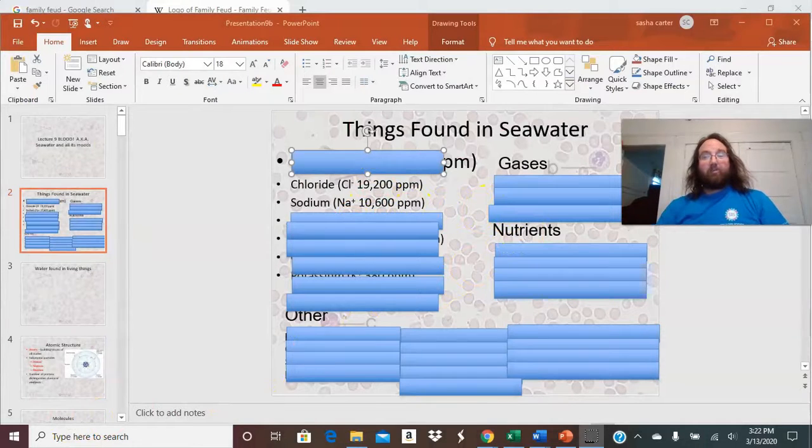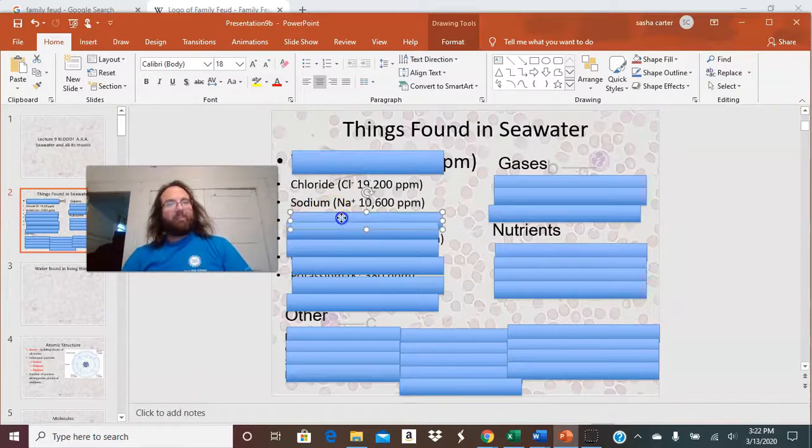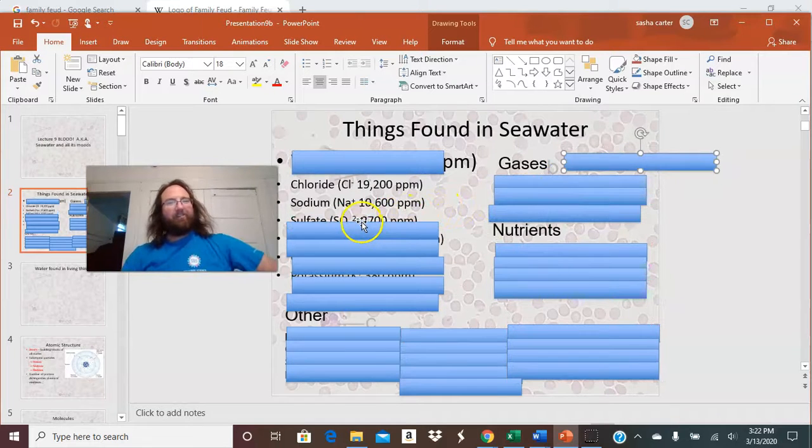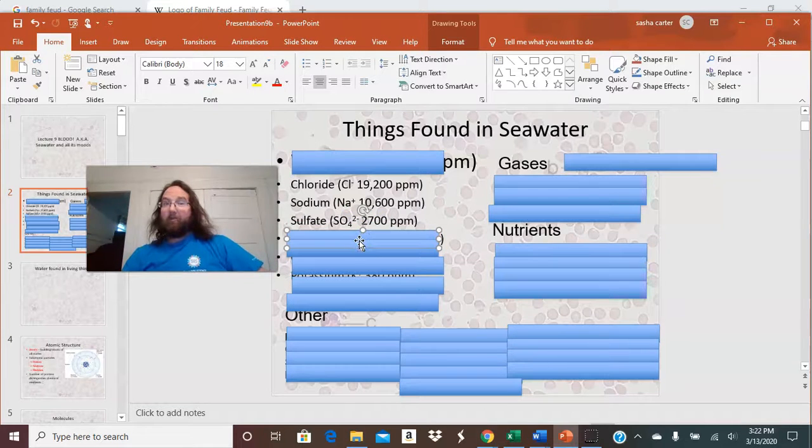Alright. What are some things down in seawater? Contestant on team two, contestant number five. I'm going to say sulfate. Do we have sulfate? Survey says, bing bing bing! Yeah! Sulfate, right on! There's quite a bit of it. This is why we see things like gypsum. You may have ever heard of the Cave of Swords. This is where we find it.